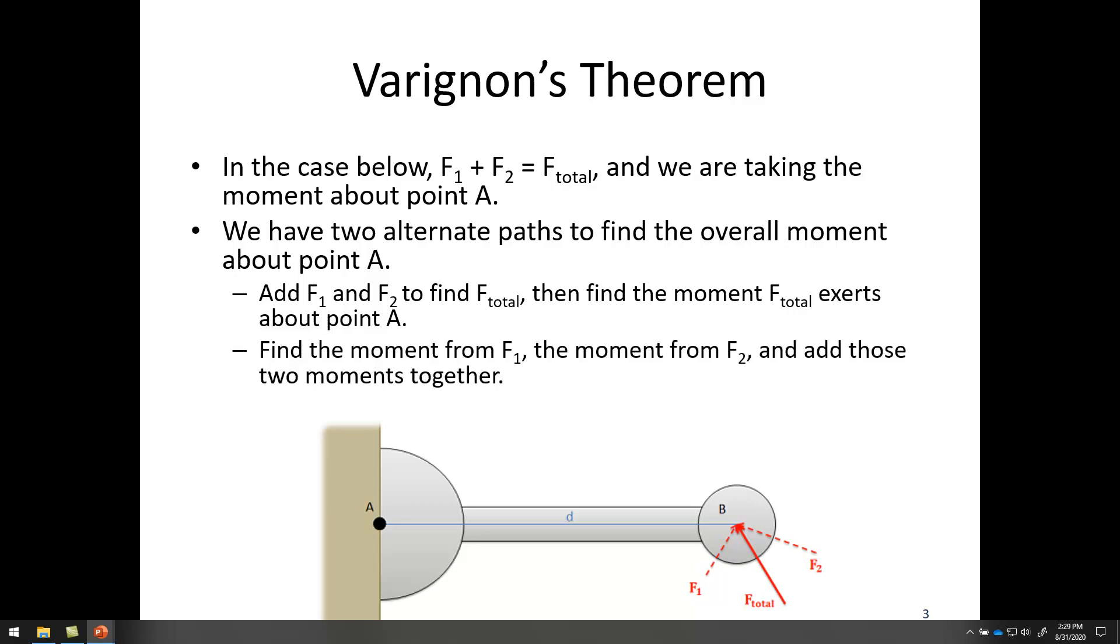The other option is to find the moment from F1, then find the moment from F2, add those two moments together, and that would give me the moment about point A.